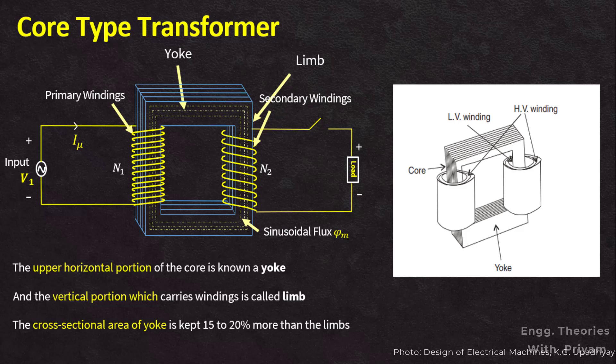While placing these windings, an insulation layer made of bakelite former is provided between the core and the lower winding, and also between the HV and LV winding. Since the low voltage winding is easiest to insulate, to reduce the insulation required, the low voltage winding is placed closer to the core, and then the HV winding is placed over the LV winding.